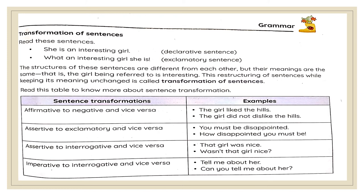Come to the grammar part: Transformation of sentences. Read the sentence: 'She is an interesting girl.' This is a declarative sentence. 'What an interesting girl she is!' is an exclamatory sentence. The structures are different but the meanings are the same — this restructuring while keeping meaning unchanged is called transformation of sentences. Examples: Affirmative to negative — 'The girl liked the hills' becomes 'The girl did not dislike the hills.' Assertive to exclamatory — 'You must be disappointed' becomes 'How disappointed you must be!' Assertive to interrogative — 'That girl was nice' becomes 'Wasn't that girl nice?' Imperative to interrogative — 'Tell me about her' becomes 'Can you tell me about her?'